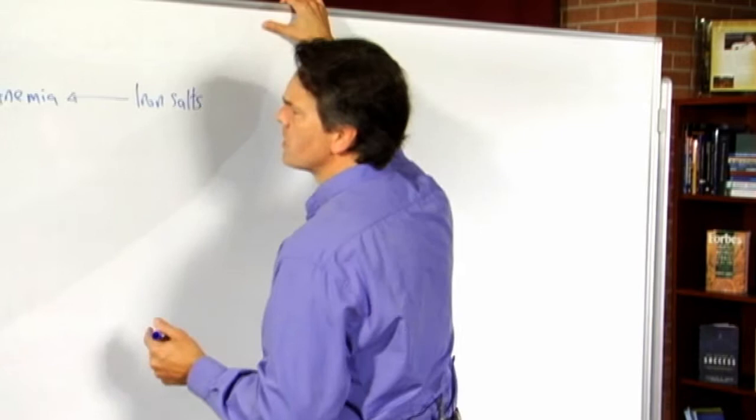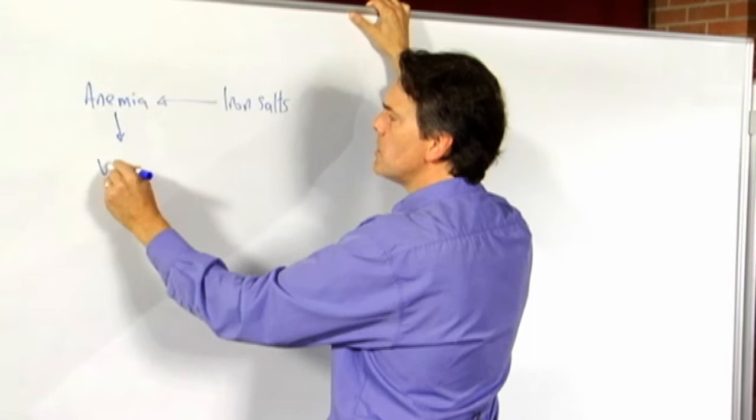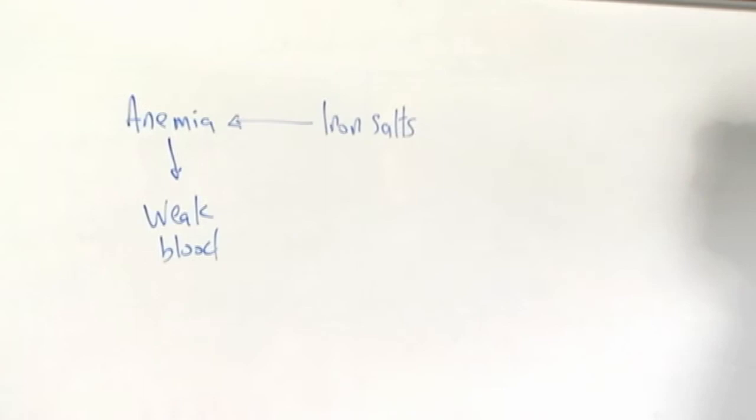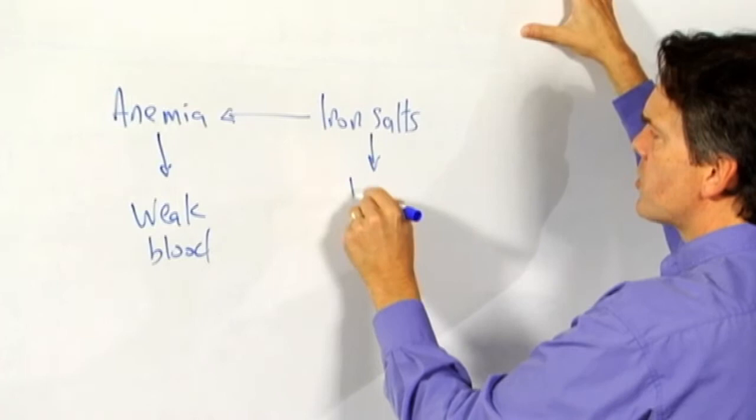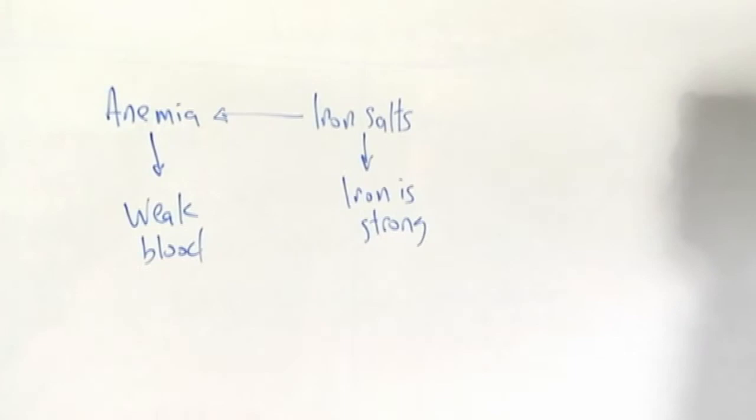Here's one of the extant theories of the time coming out of a school of thought called Iatrochemistry. The reasoning was something like the following. What do we know about anemia? The prevailing theory at the time is that anemia is a matter of having weak blood. What do we know about iron? We know that iron is strong.